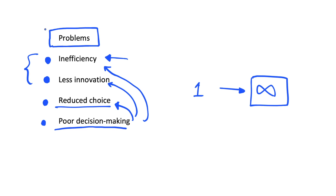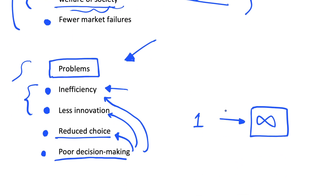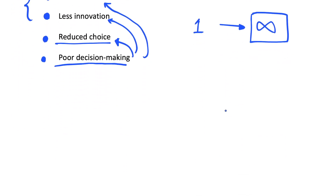As we can see, there are key problems with both the command economy and the free market economy, and this is why we tend to have mixed economies that correct some of these problems. We may not get the full extent of the benefits of these very extreme types of economies, but getting rid of these key issues that reduce social welfare is beneficial. A mixed economy tends to be the way to go, and it's less risky than having either extreme. Please leave a like if this was useful, check out the playlist for future videos and the past video on free market economies, and subscribe for future economics videos.